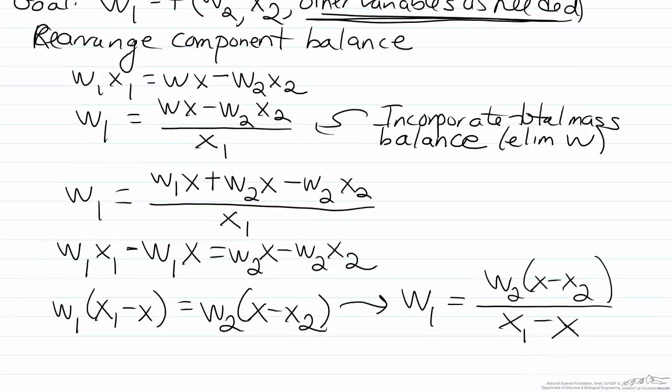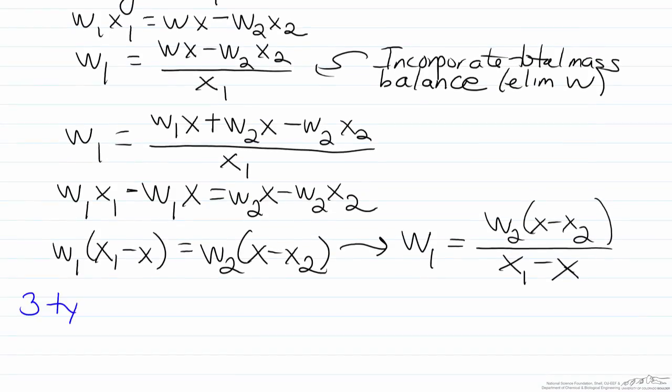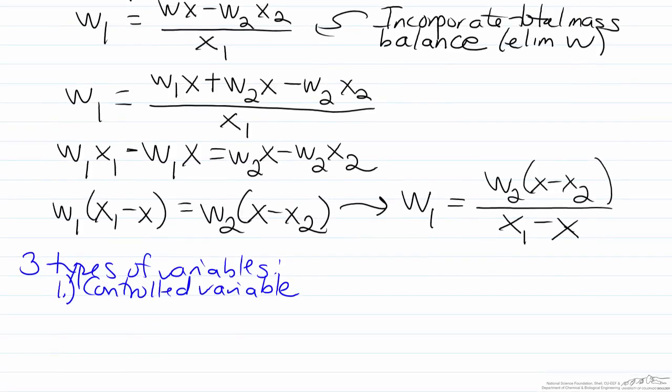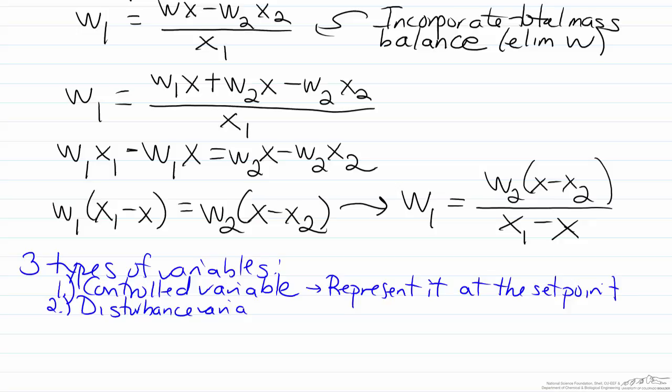When developing these static feedforward controls, we have three types of variables. The first is the controlled variable, and remember we don't have the measurement of this controlled variable, so therefore we will represent it at the set point. The second is the disturbance variable or variables. Here we will just leave them as is, because they are variables which we are measuring using the transmitters.